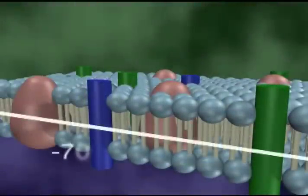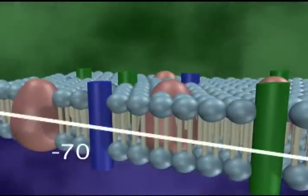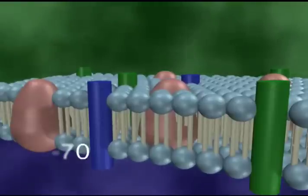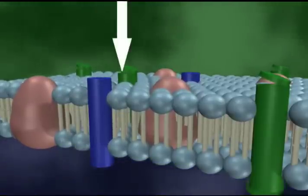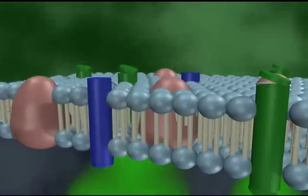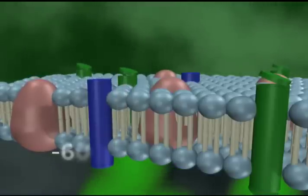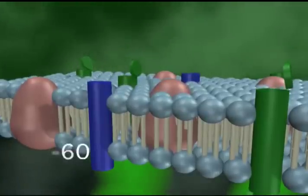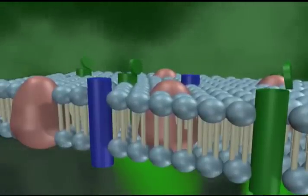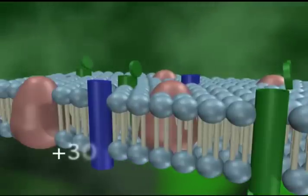An action potential starts on a polarized membrane which is negative 70. A stimulus causes the sodium gates to open slightly and sodium starts to trickle into the cell. If the cell reaches negative 60 or threshold, the sodium gates open wide and sodium floods in, bringing the inside of the axon to positive 30.